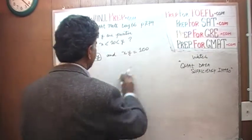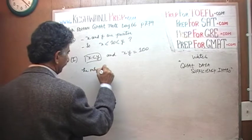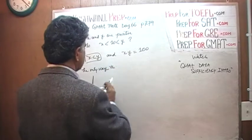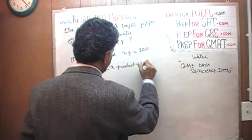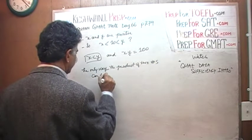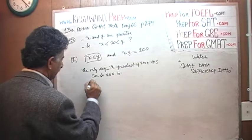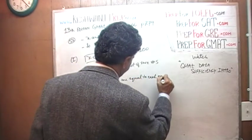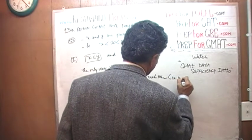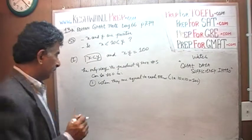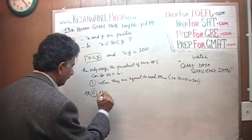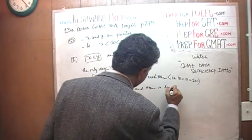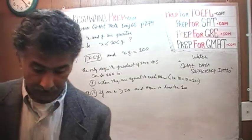The only way the product of two numbers can be 100 is one, when they are equal to each other, i.e. 10 times 10 is 100. That is one possibility. Or another possibility is if one is greater than 10 and other is less than 10. That is the only possibility. Why? Let's think about it.